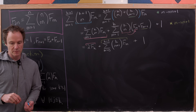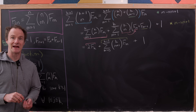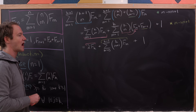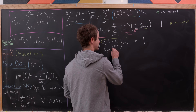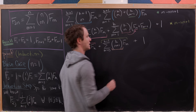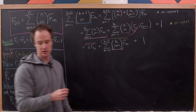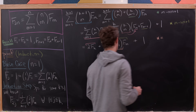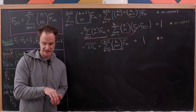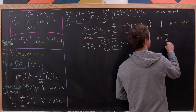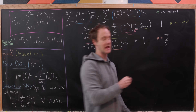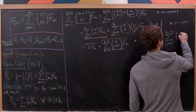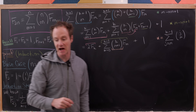Now I'll apply the identity I mentioned at the beginning of the video — the hockey stick identity — to the binomial coefficient k choose m+1 underlined in peach. That coefficient is in fact equal to the sum as j goes from m to k-1 of j choose m.